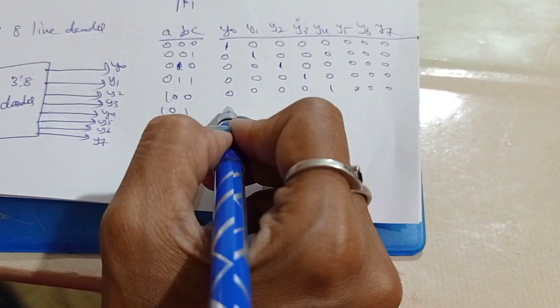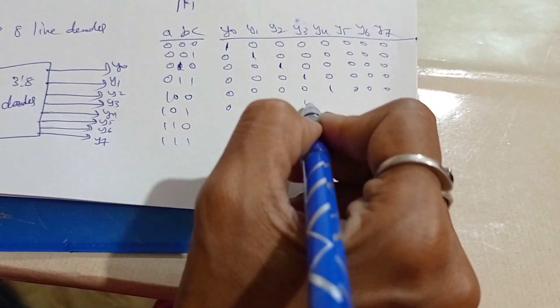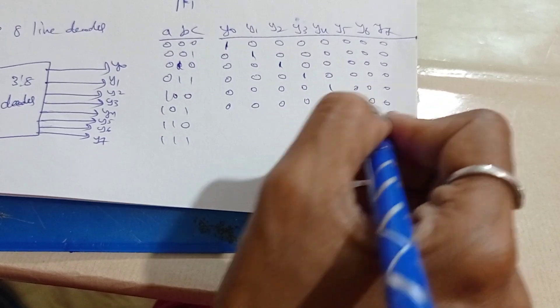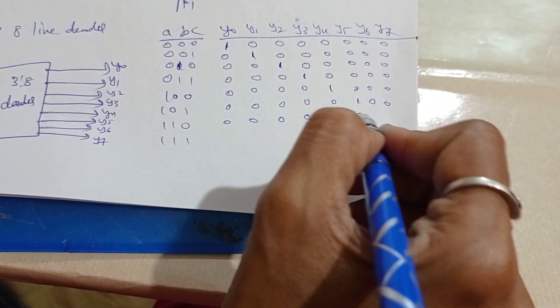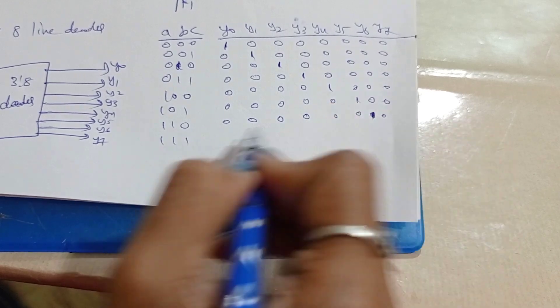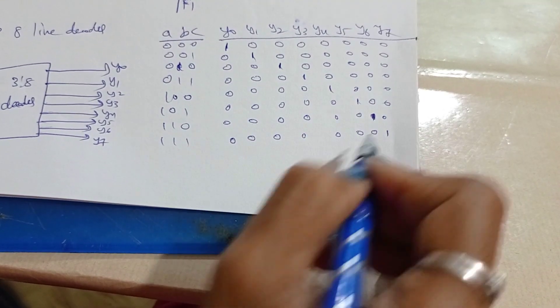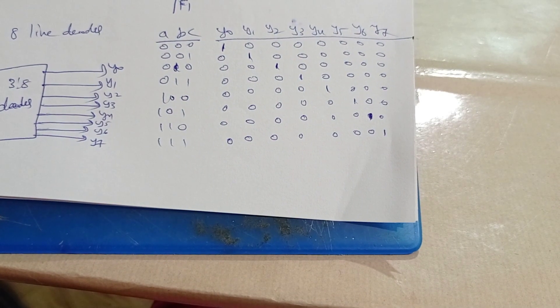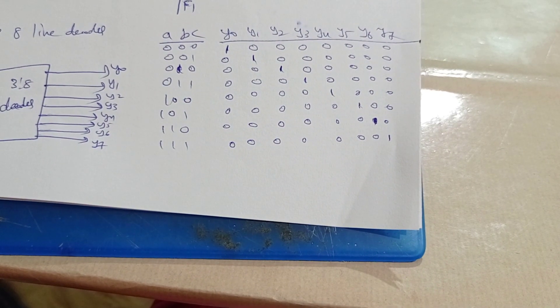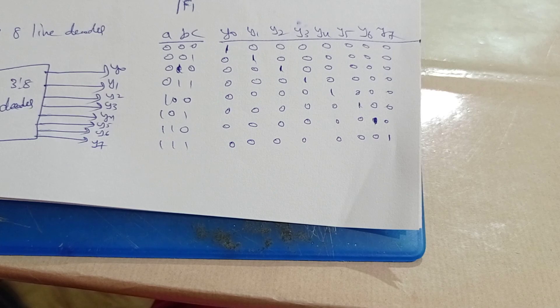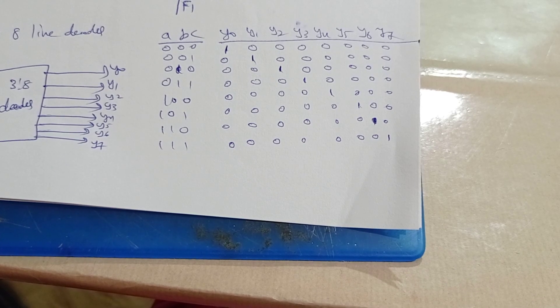For four, Y4 is one and all zeros. Five, Y5 is one. Six, Y6 is one. Seven, Y7 is one. This is how to draw the three is to eight line decoder with truth table and all.